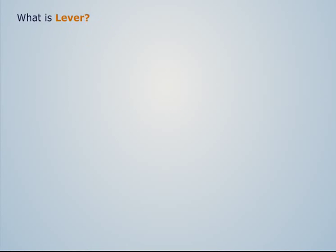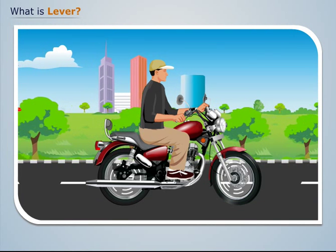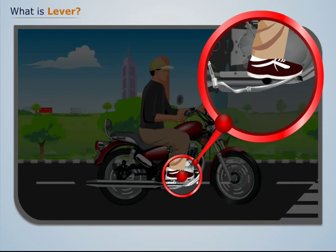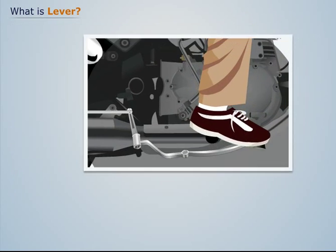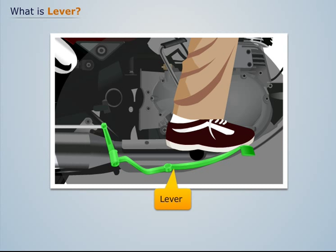What is lever? In a motorbike, in order to break the motion of the bike, we press a rigid rod or bar near the foot. Such a rigid rod or bar is known as lever.